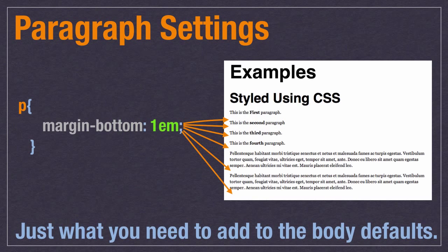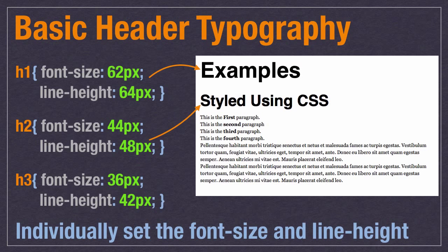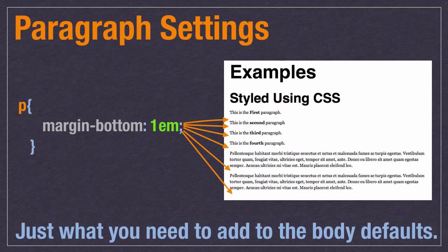Next are paragraph settings. Paragraphs will generally use the same font you set on the body — that's the reason you set defaults there. What we're adding here is a 1em bottom margin so that paragraphs have some space between them. Without margins, the paragraphs looked scrunched together; with the bottom margin, there's clear space between them and it's much easier to read and see that they're separate.